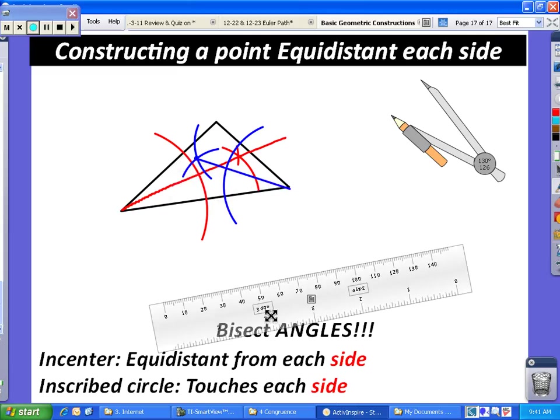And you have now, see, you can see where that red line and blue line intersect right here. And that is now going to be called your incenter. That is now equidistant from each side of your triangle.